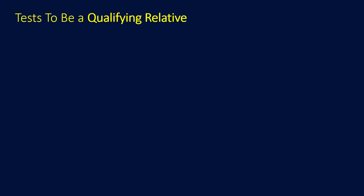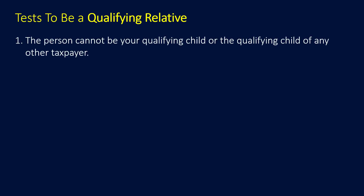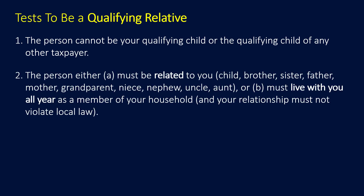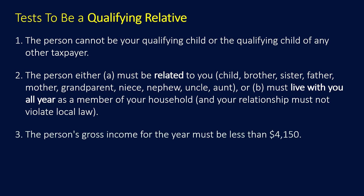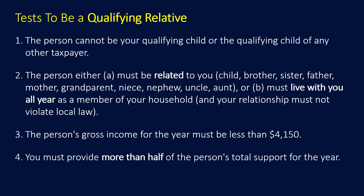The IRS tests to be a qualifying relative: the person cannot be your qualifying child or the qualifying child of any other taxpayer. The person must either be related to you — a child, brother, sister, father, mother, grandparent, niece, nephew, uncle, or aunt — or must live with you all year as a member of your household, and your relationship must not violate local law. The person's gross income for the year must be less than $4,150, and you must provide more than half of the person's total support for the year.